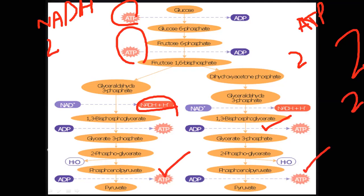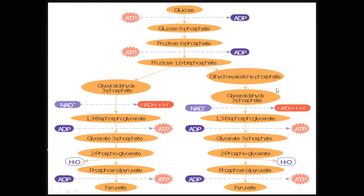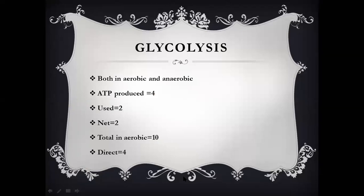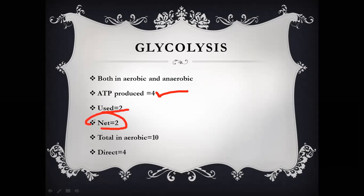Overall from glycolysis, we get 4 ATPs from substrate-level phosphorylation and 2 NADH. In anaerobic respiration, only substrate-level phosphorylation ATPs count, so with 2 ATPs used, the net is 2 ATPs. In aerobic respiration, we get 4 ATPs from substrate-level phosphorylation plus 2 NADH, and each NADH gives 3 ATPs via the electron transport chain, which requires oxygen. So from 2 NADH we get 6 ATPs.